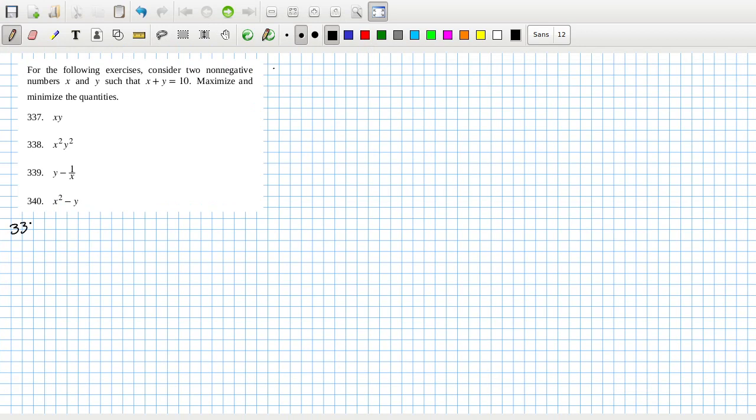337: That's x times 10 minus x. That's 10x minus x squared. Let's call it z. So dz/dx equals 10 minus 2x.